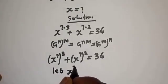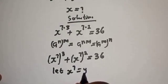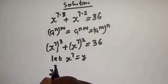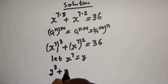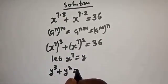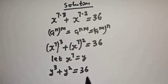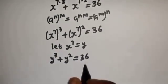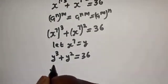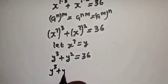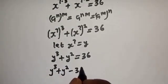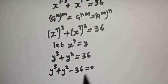Let s to the power of 7 equal y. Then y raised to power 3 plus y squared equals 36. Bringing everything to one side: y raised to power 3 plus y squared minus 36 equals 0.